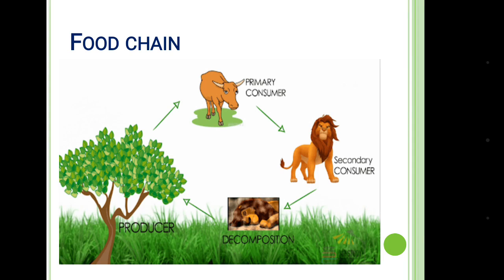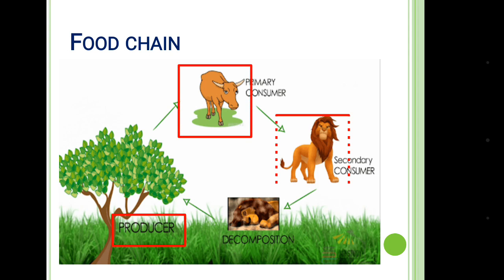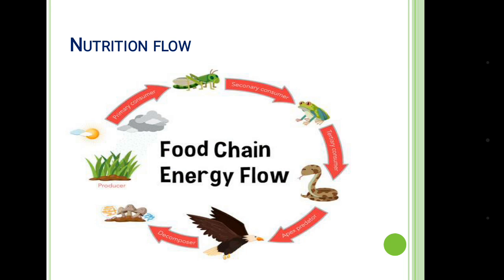So here we can see a food chain where the plants are utilizing sunlight for producing their own food. Then the different levels of consumers are taking the food, and then after the death, decomposition is occurring. And again the nutrients are produced in the environment for use by the producers.